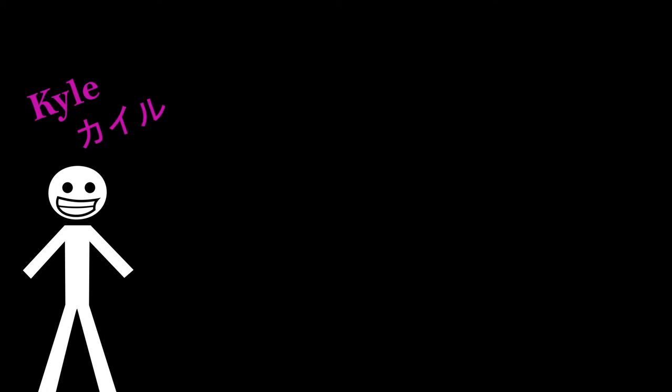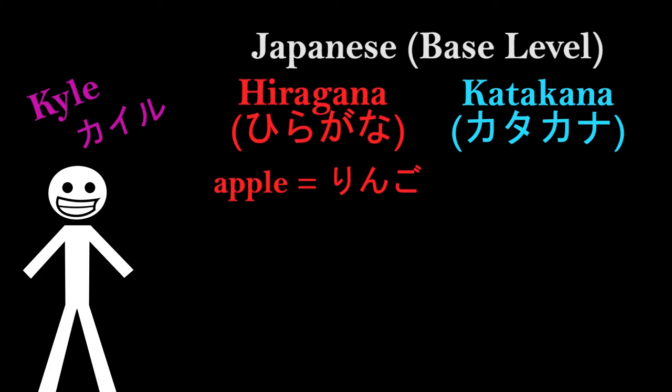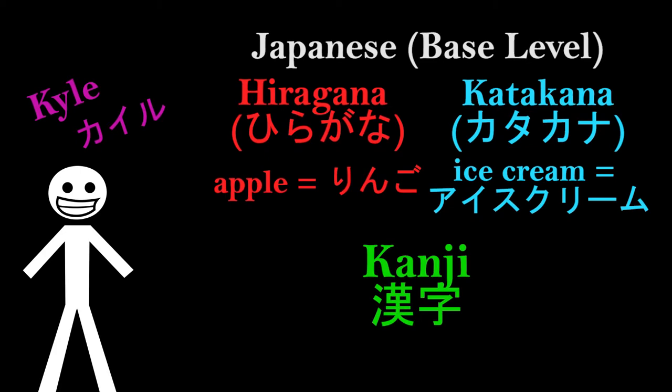Here's some quick background. Japanese can be seen as having three different alphabets. This one is for words that have a Japanese equivalent, such as apple being ringo. This one is for words that the language does not have an equivalent for, such as ice cream being ice cream. And finally, we have kanji. As a native English speaker, learning kanji is pretty difficult.